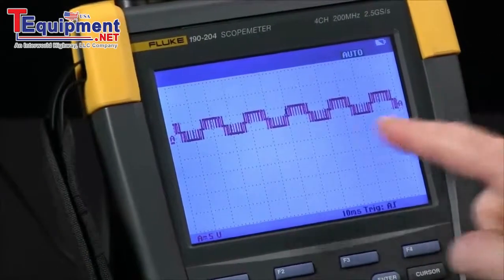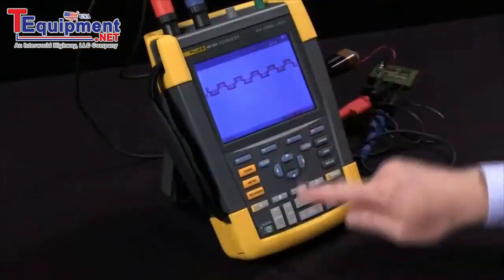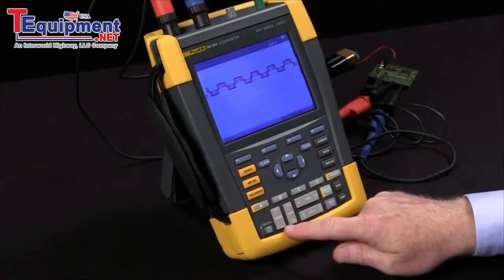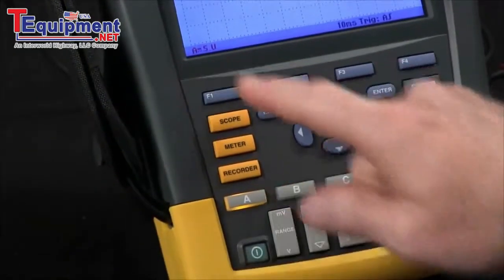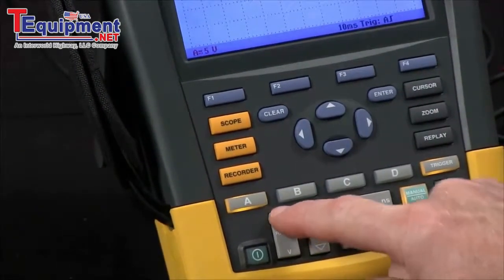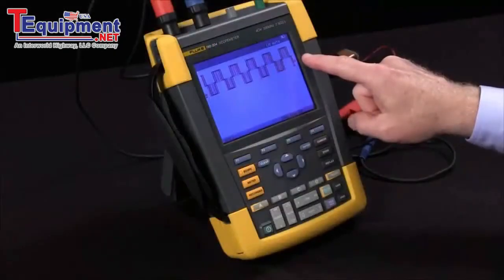I'm going to start off by changing my volts per division for channel A. I've got the rocker switch, 5 volts per division, hit the top end of this for millivolts. We change to 2, we've got a bigger display.